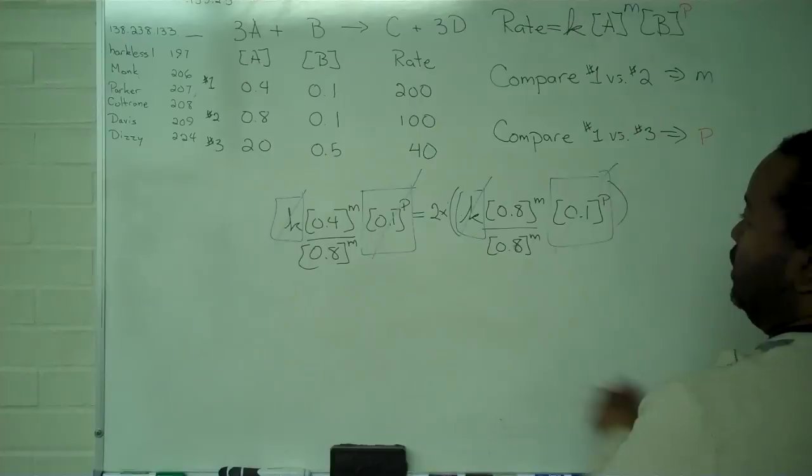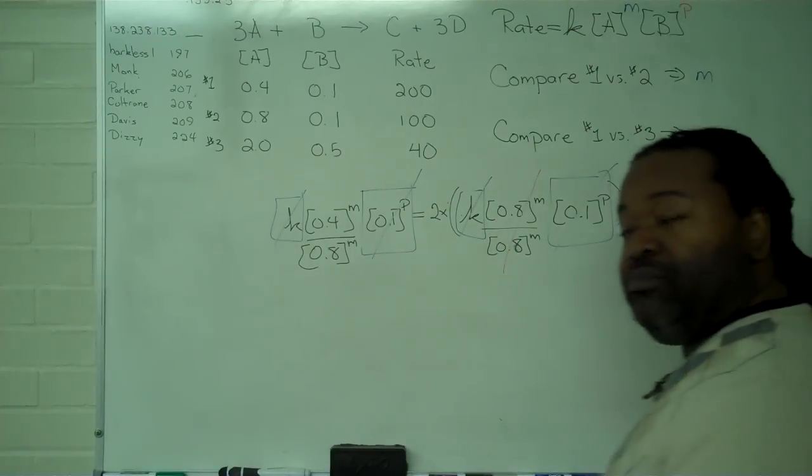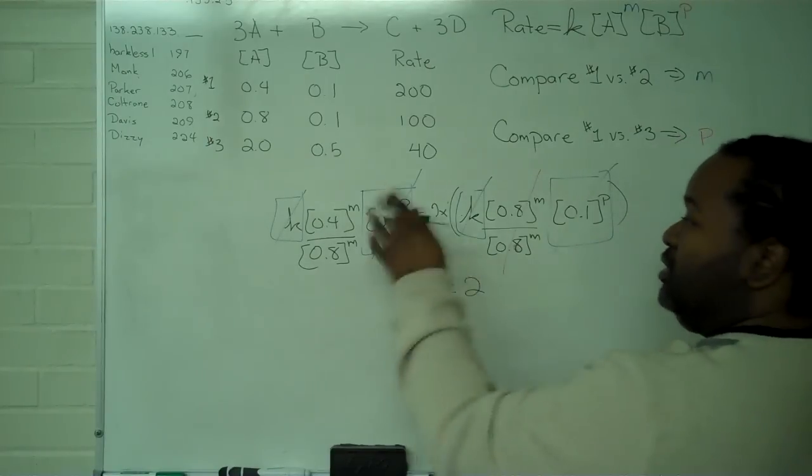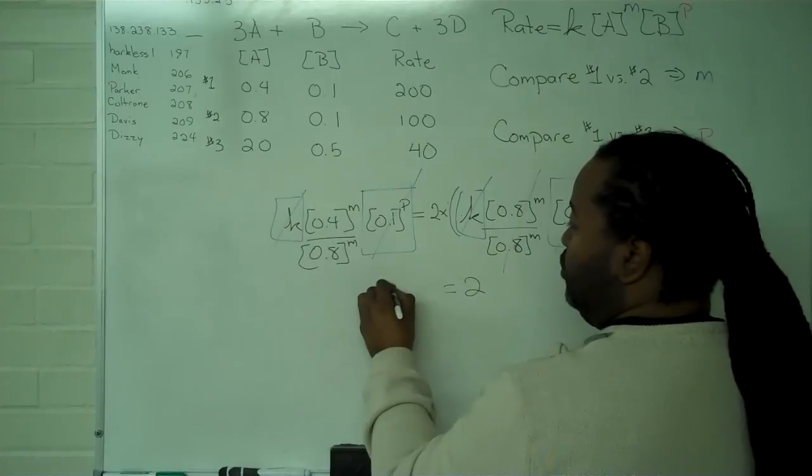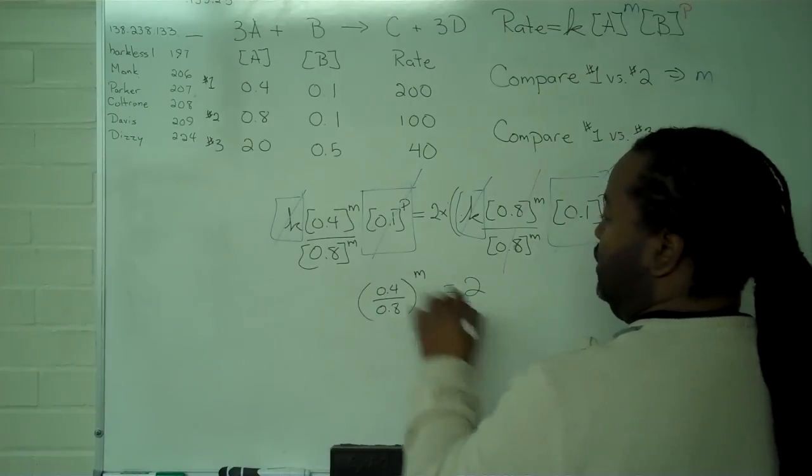This allows me to cancel out the term here. Now, what I'm left with is two on the right-hand side, and on the left-hand side I have 0.4 over 0.8, all raised to the M power.